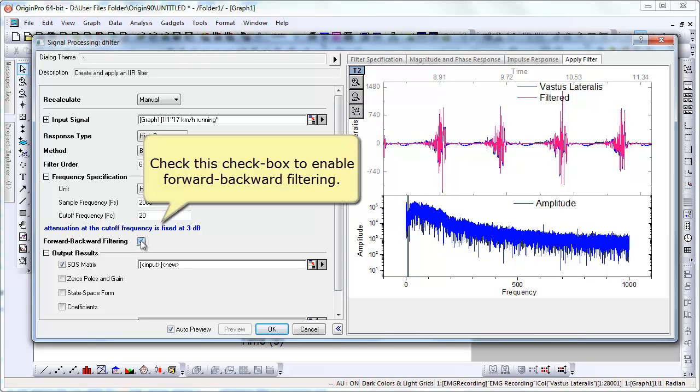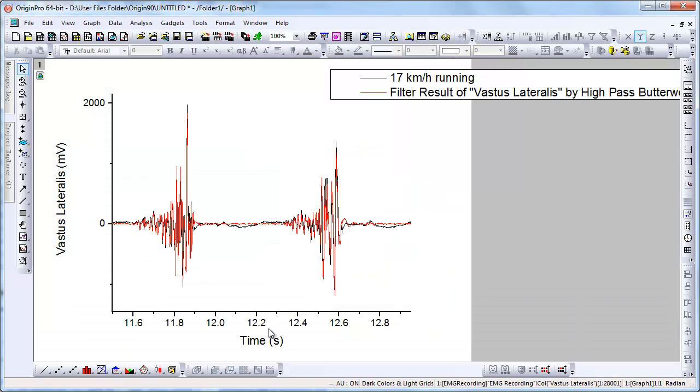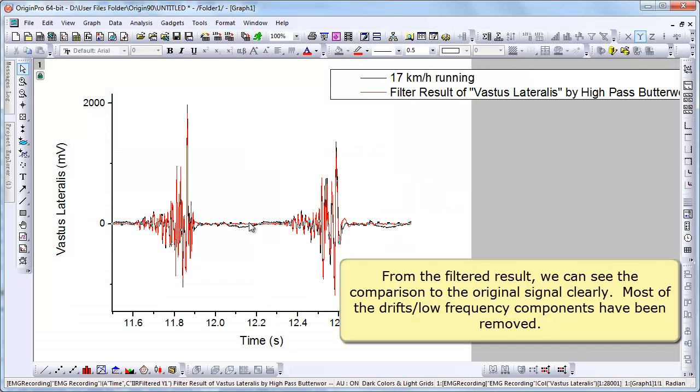There is a forward-backward filtering checkbox. Let's turn on all four output results. Click OK. From the filtered result, we can see the comparison to the original signal.